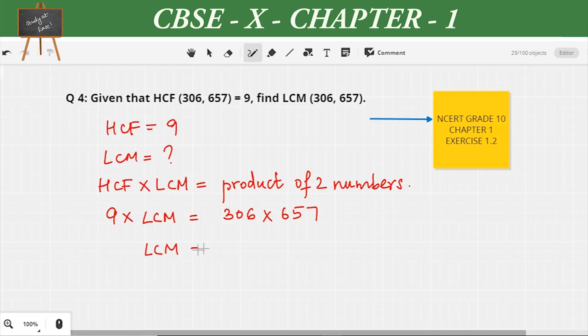When something which is on multiplication goes to the other side, it becomes division. So LCM = 306 × 657 ÷ 9. On dividing you will see that the answer is 22,338. So we found the LCM.